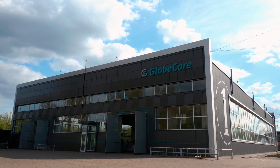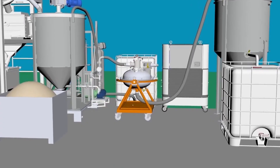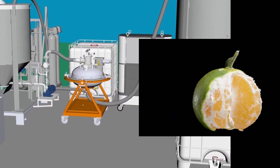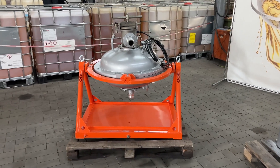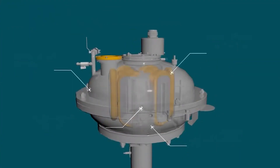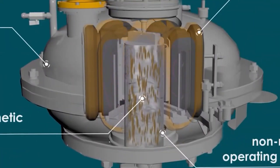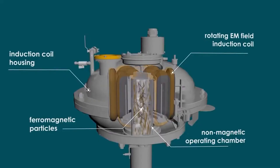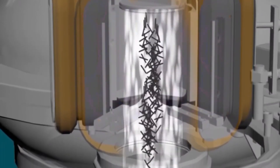Considering this, GlobeCore has developed an innovative technology to improve the efficiency of pectin extraction from lime peel. This technology is implemented through the use of AVS vortex layer devices. A vortex layer device is a compact unit containing an operating chamber filled with ferromagnetic particles.